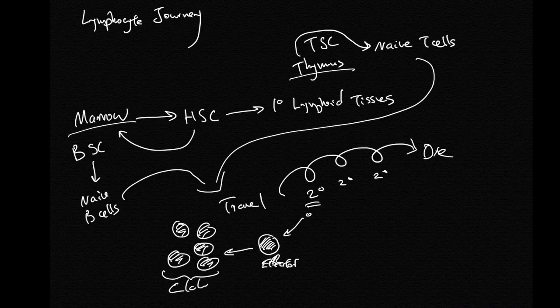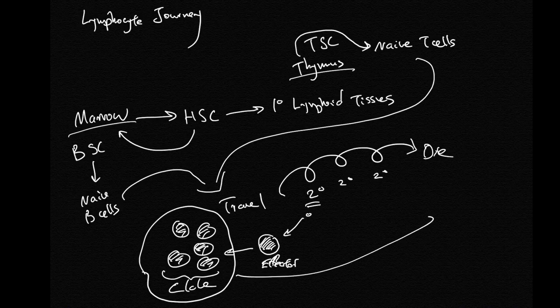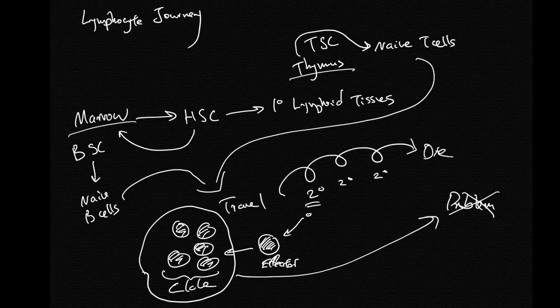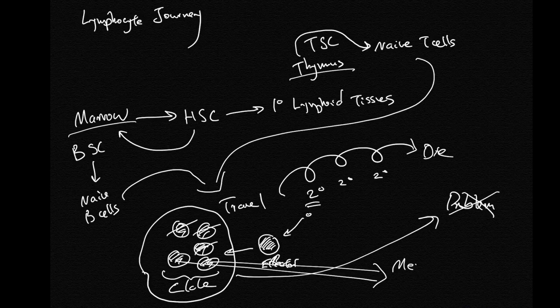These clones of effector lymphocytes will go on and resolve the problem. When the problem is gone, most of these cells within the clone will die, but some of them can remain as memory. Memory effector cells can stay in the tissues nearby.